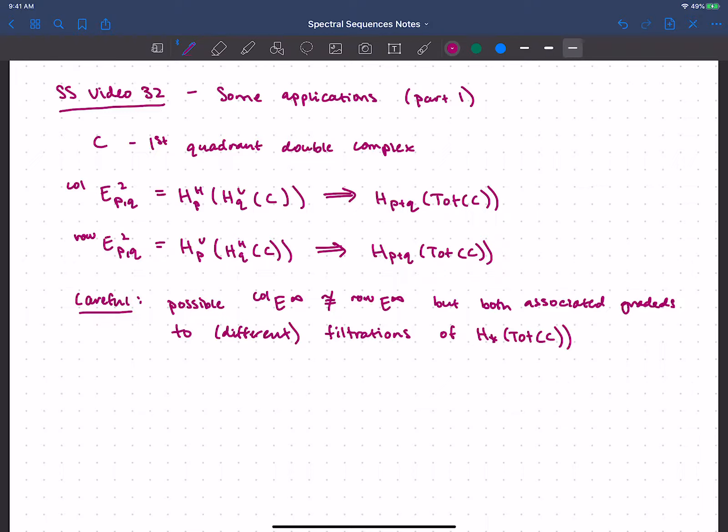But they're associated gradeds of the same thing if you ignore the filtration piece. So if I can solve all the extension problems and know the answer, then I should get the same thing. Okay, so I said a good source for this is Keel's Spectral Sequences: Friend or Foe, this nice little note.